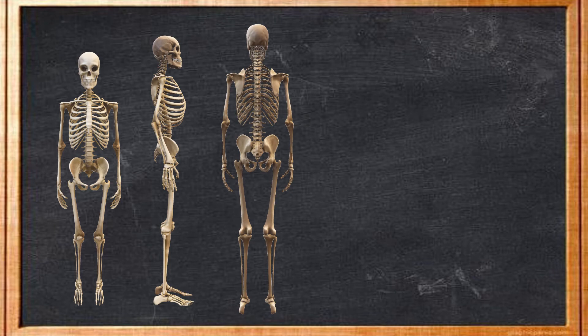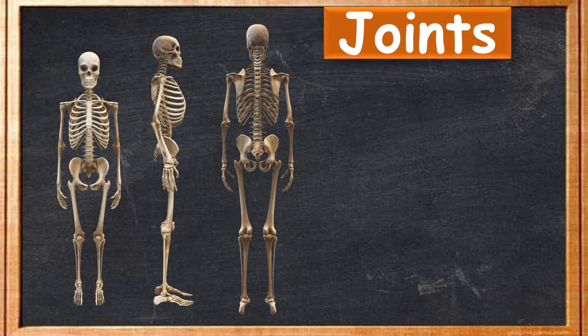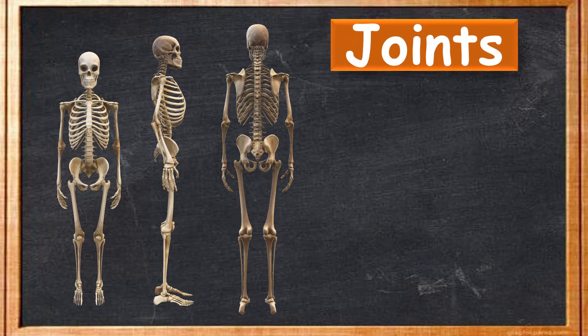Good morning children. This is science period. We are on the second chapter, that is Human Body: The Skeletal System. We are clear with what is a skeleton and the major bones of the skeleton. In today's class we will learn about different joints in our body. Joints mean a place where two things meet.